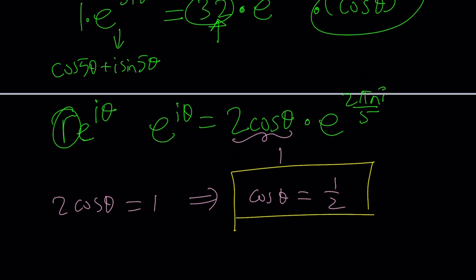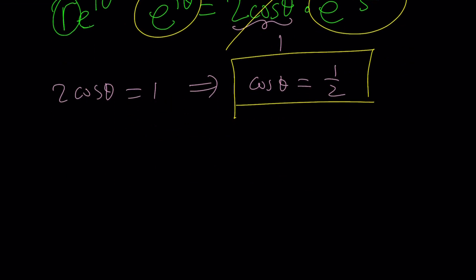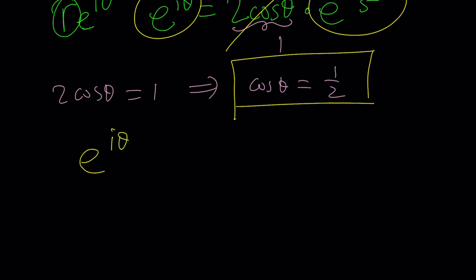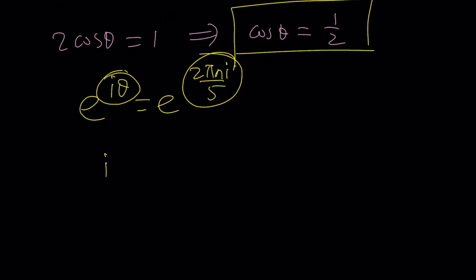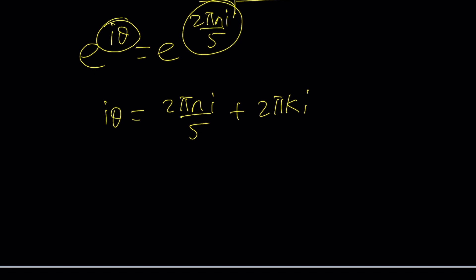But another thing that happens here is if this is one, this should equal that. So E to the i theta equals E to the two pi n i divided by five, which means the exponents are supposed to equal. But maybe I should add two pi k i to it, multiples of two pi, because you can always multiply one side by one, which is E to the power two pi k i. For n and k are integers, by the way.